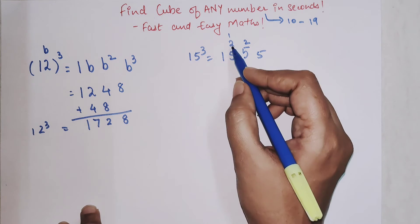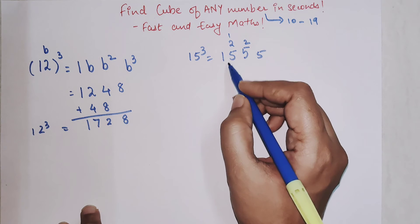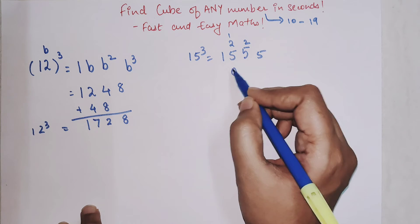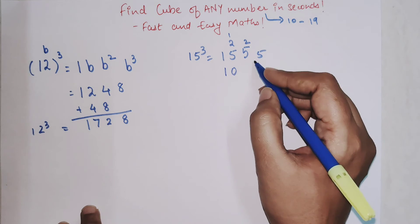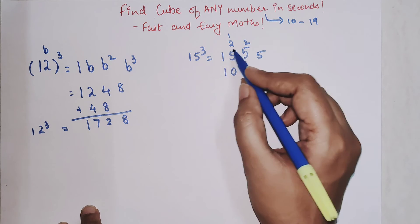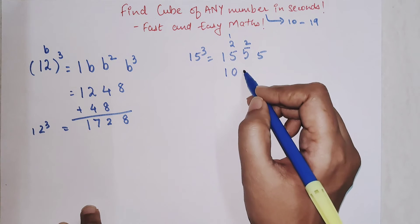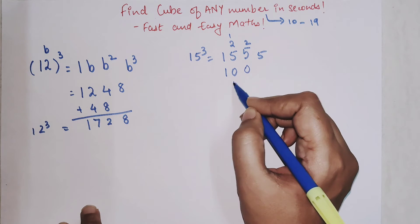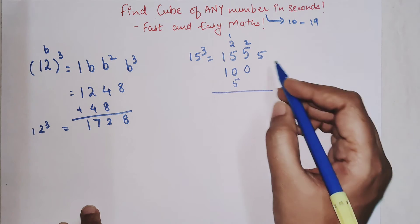One will be written here, two will be written here, and five will be written here. Then next is doubling. So five double is ten, so zero and one. And here we had 25, so you will write double of 25 will be 50, so zero and five.